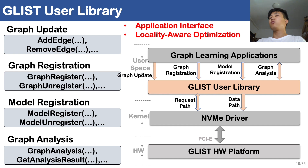The GLIST user library offers users interfaces to operate the GLIST system. Specifically, there are four types of application interfaces: graph update, graph registration, model registration, and graph analysis. The API calls from graph learning applications are handled by the GLIST user library and are translated to NVMe commands via either request pass or data pass, and are further sent to the device side via PCIe. In addition, the GLIST user library also performs locality-aware data layout optimization, which we call graph reorganization, to help exploit spatial data locality when calling graph registration or graph update APIs.